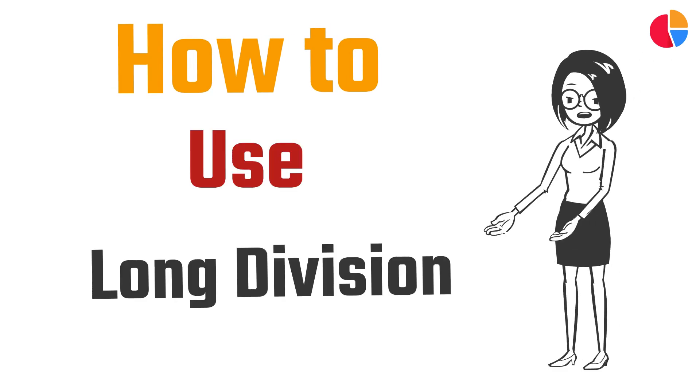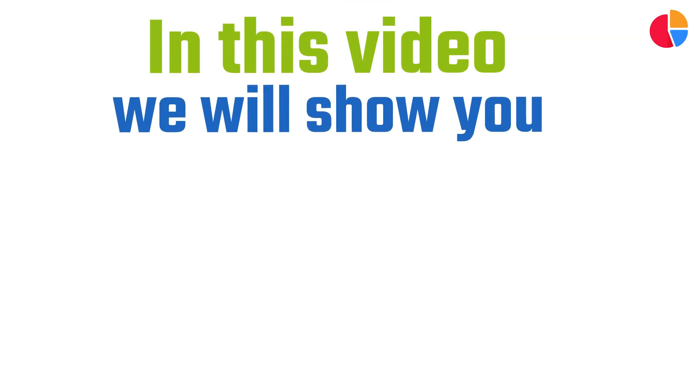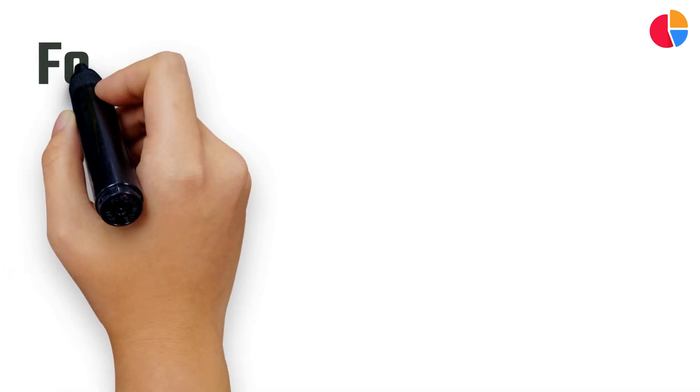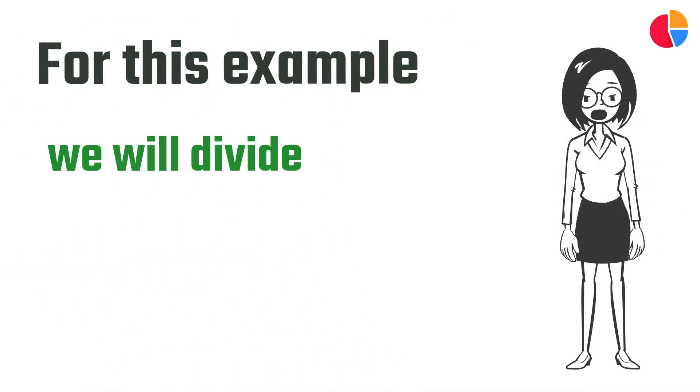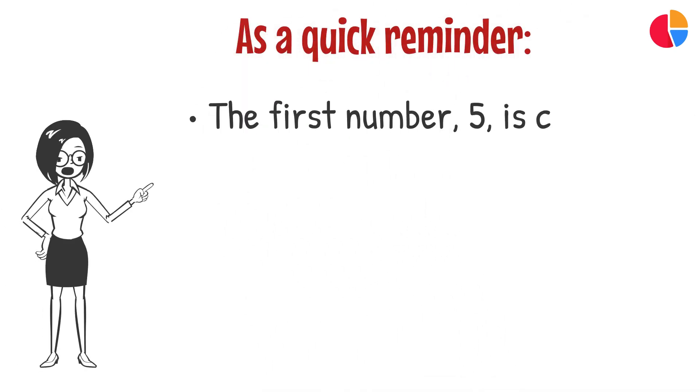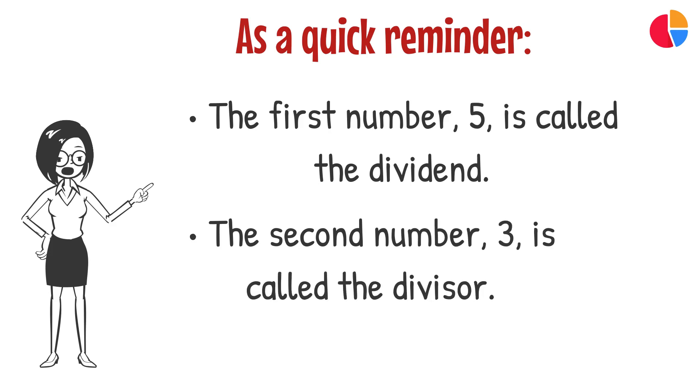How to use long division. In this video we'll show you how to divide one number by another using long division. For this example we will divide five by three. As a quick reminder, the first number, five, is called the dividend. The second number, three, is called the divisor.